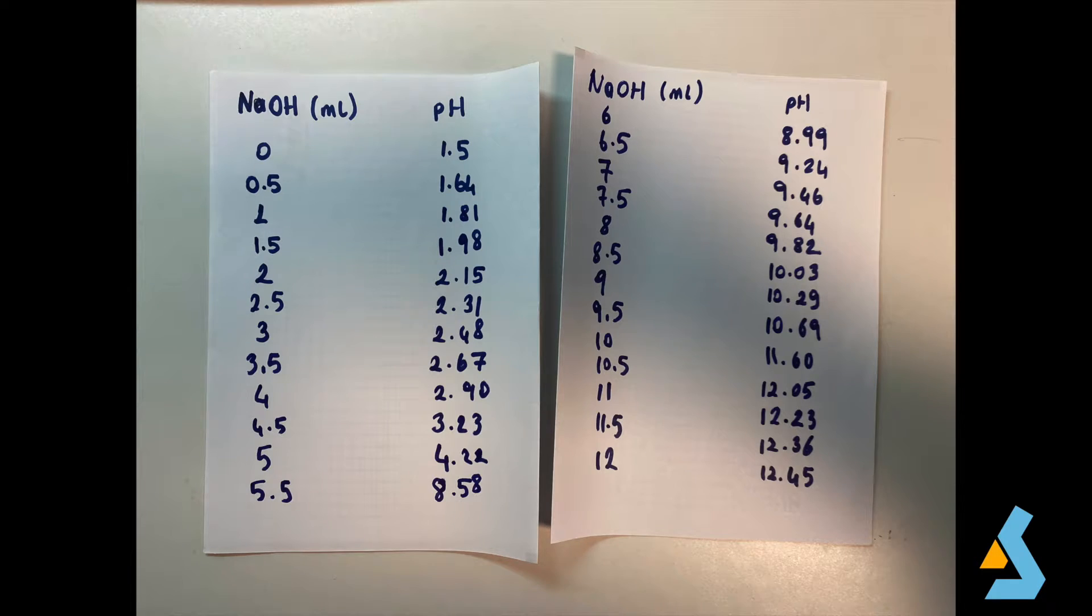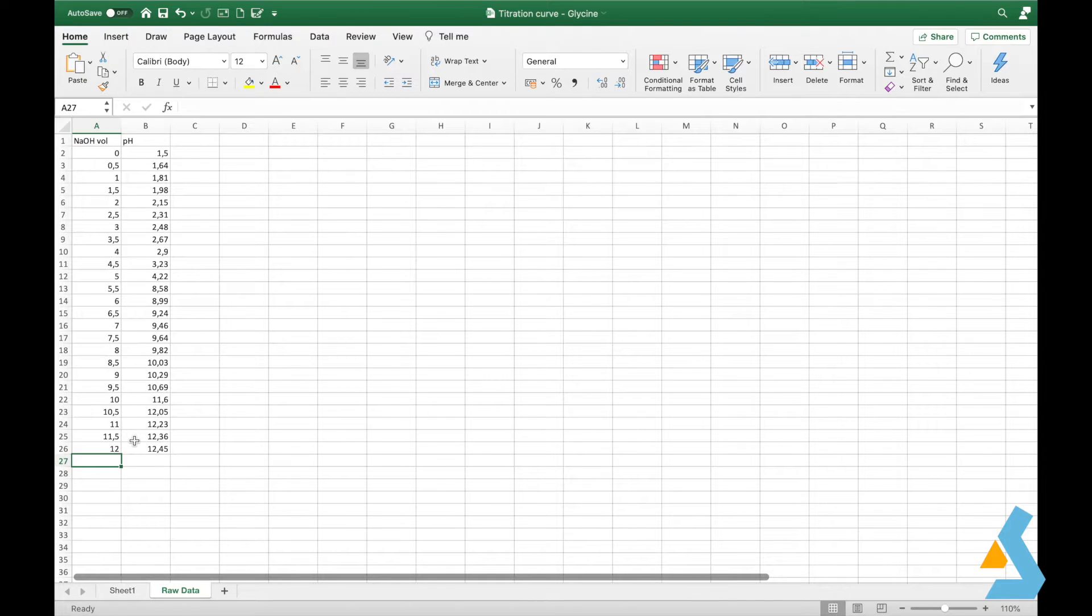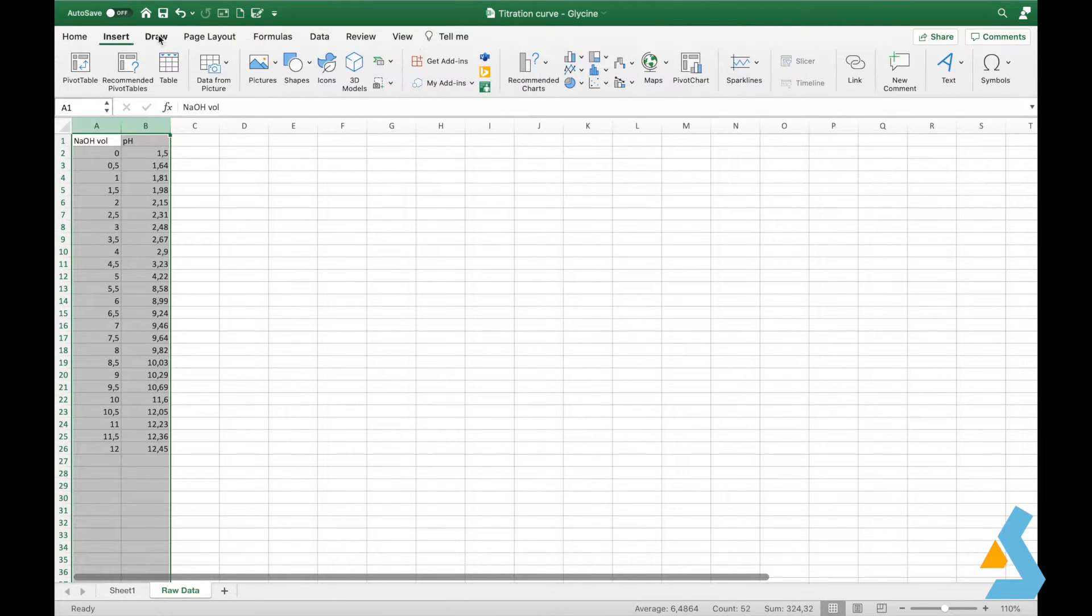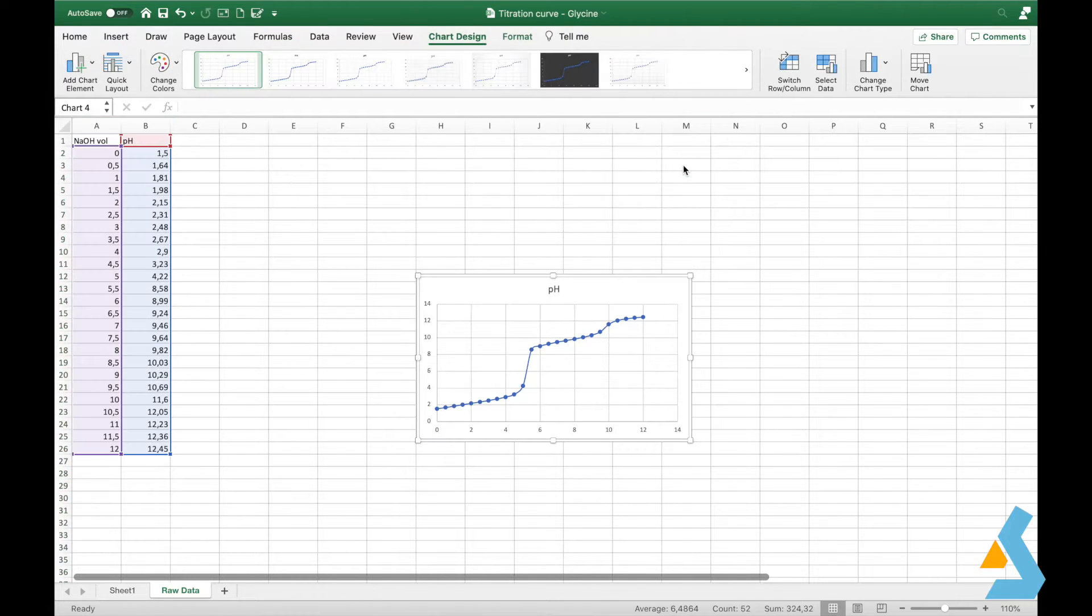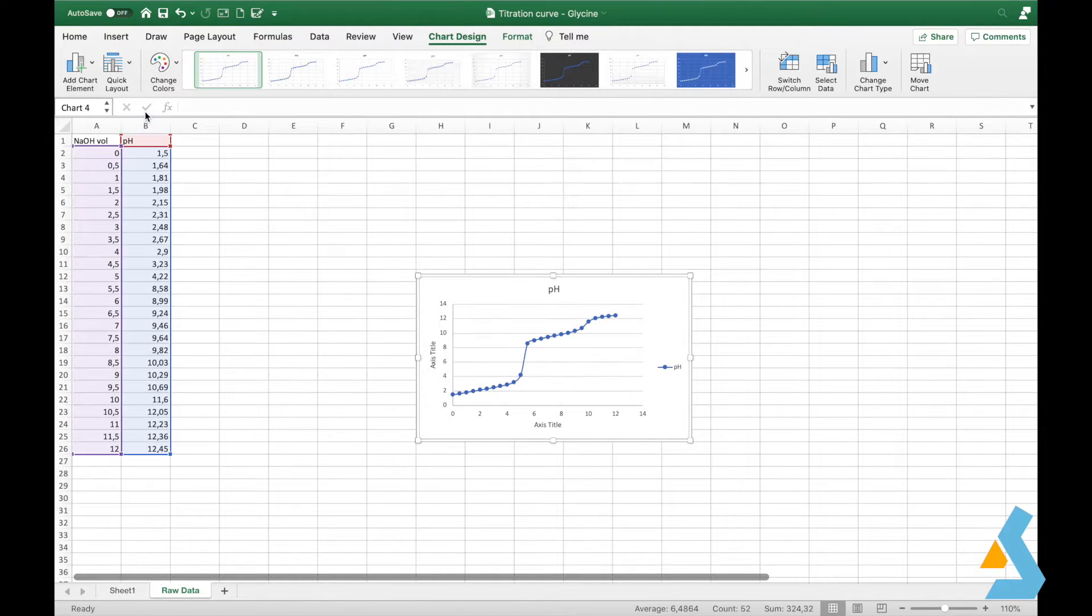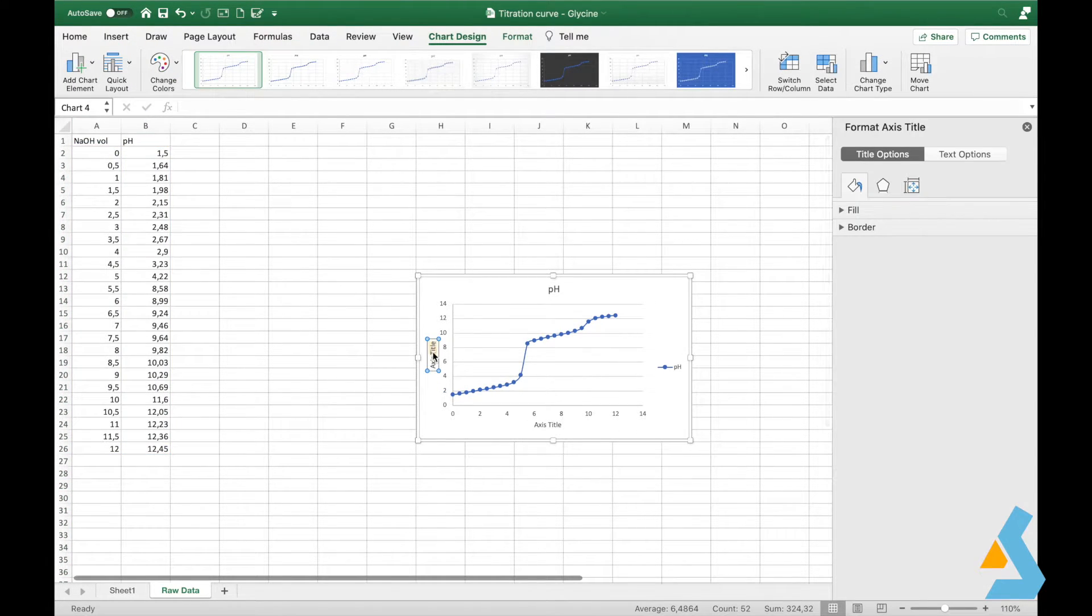We will use this measurement to plot a titration curve for glycine. The first thing you need to do is to transfer your data to an Excel sheet. We have typed in all optimized measurements. First thing we can do is to visualize what we have. To see a plot of pH with respect to sodium hydroxide additions, simply go to insert and add a scattered curve.